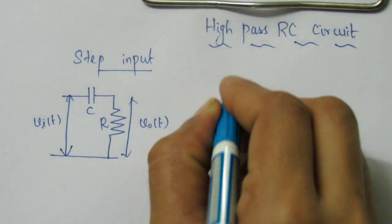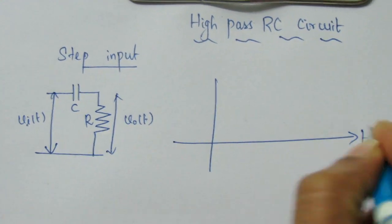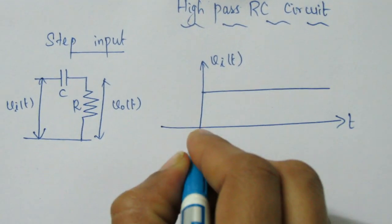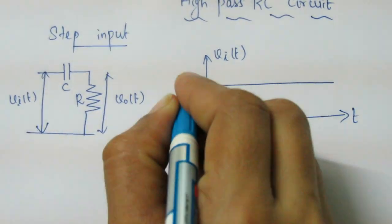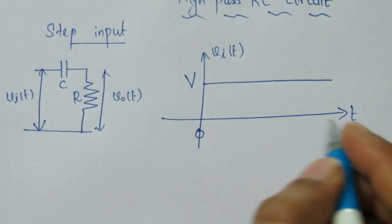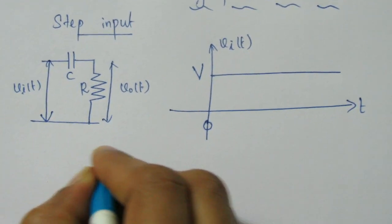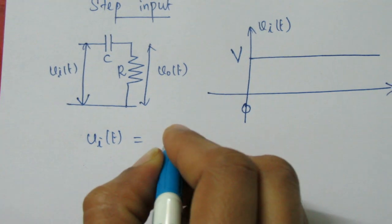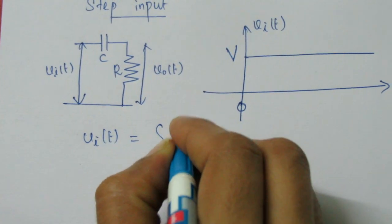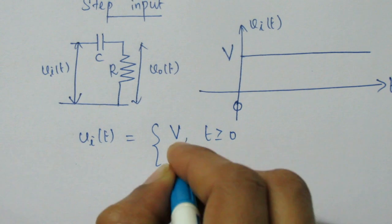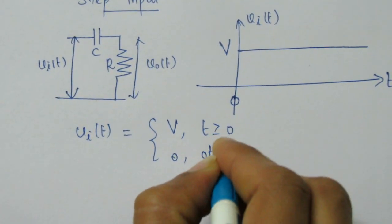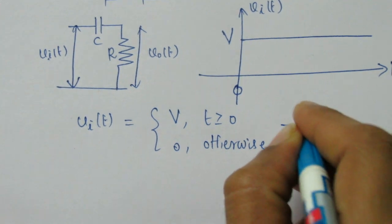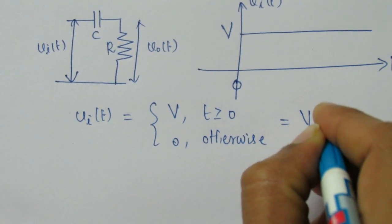The step signal is represented as a signal which has a value of V from 0 to infinite. Mathematically the step signal is written as V_i(t) = V for t greater than or equal to 0, and 0 otherwise. This can be simplified and written as V into U(t).